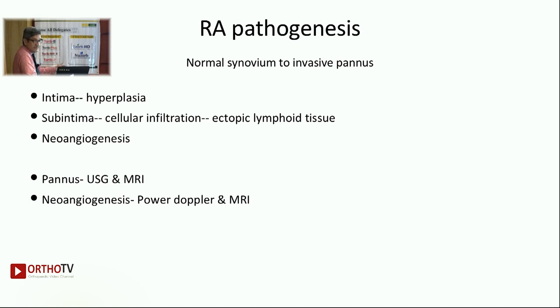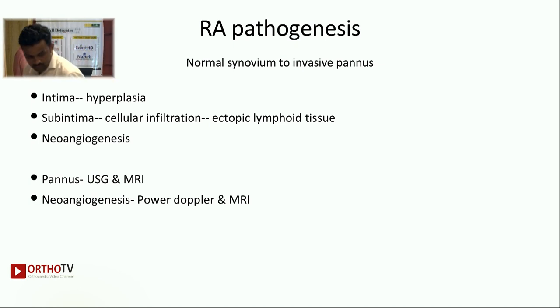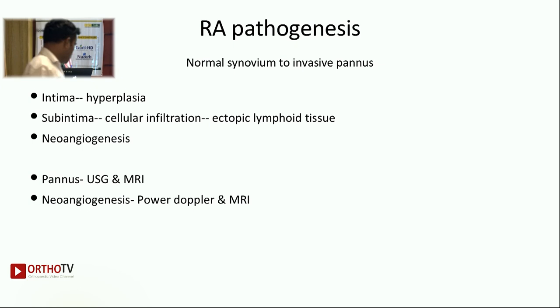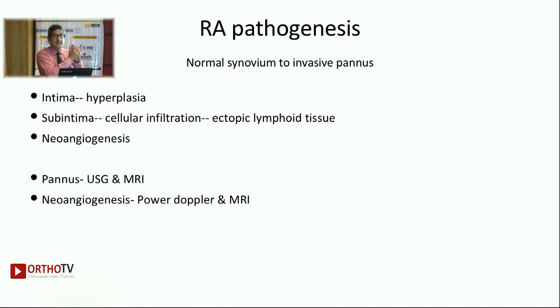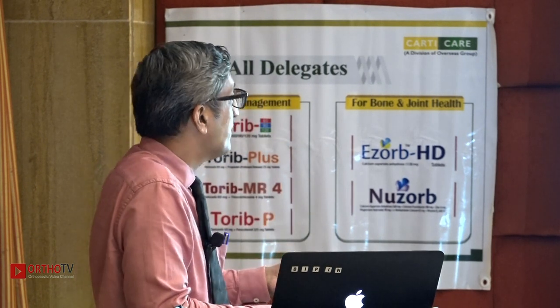How can we detect this with investigations? Pannus will be obviously visible as synovitis. When it is not visible — subclinical — we can always pick it up with ultrasound or MRI. The neoangiogenesis: MRI will pick it up, and with ultrasound we can always get a power Doppler to see. So when somebody has pain and I cannot see obvious synovitis, a trained MSK radiologist will tell me two things: there is synovial hypertrophy in these joints, and with power Doppler, there is synovial hypertrophy with angiogenesis — meaning it is inflammatory synovitis. That is how we help with an early diagnosis.